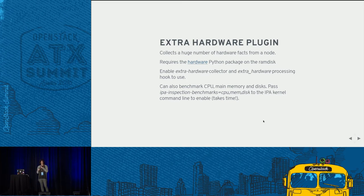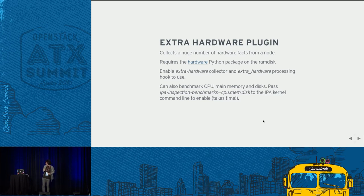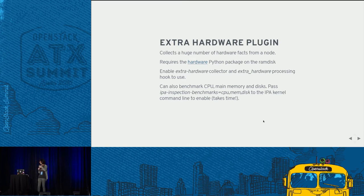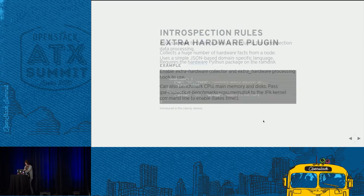One plugin that people usually aren't aware of is the extra hardware plugin, available on both the RAM disk side and the service side. It uses the hardware Python library and collects an enormous amount of information — around 1,000 facts from the node. We can store it in Swift and use it from there. You enable a collector on the RAM disk side and enable a processing hook on the service side. This plugin can also run benchmarks — CPU, memory throughput, disk operations — though benchmarking typically takes two to three minutes, scaling linearly with more CPUs and disks.